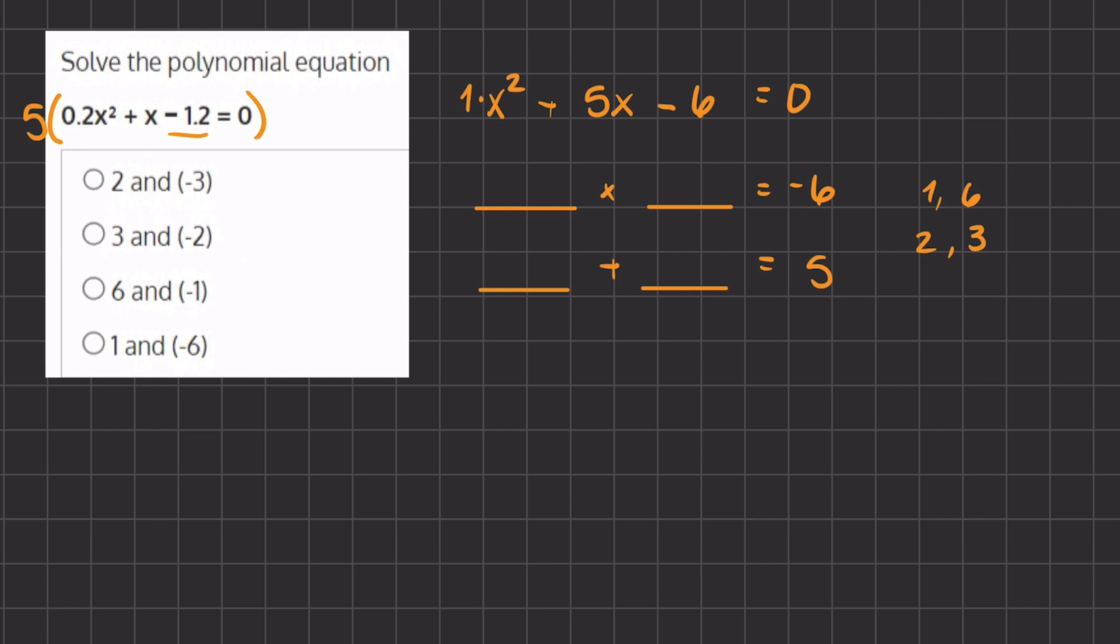We have 1 and 6, and 2 and 3. Both of these pairs can add up to 5: 2 plus 3 gives us 5, and also 1 and 6 can give us 5.